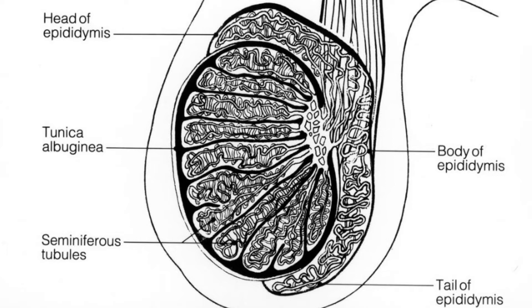The tubules are lined with a layer of germ cells that develop from puberty through old age into sperm cells. The developing sperms travel through the seminiferous tubules to the rete testis, located in the mediastinum testis, to the efferent duct and then to the epididymis, where newly created sperm cells mature.